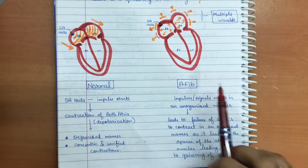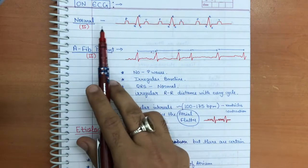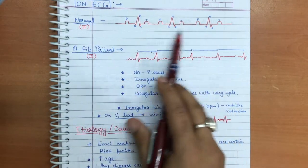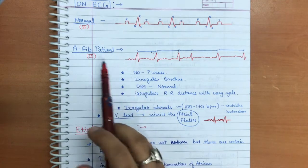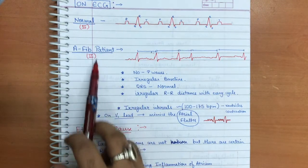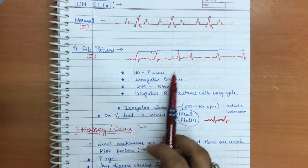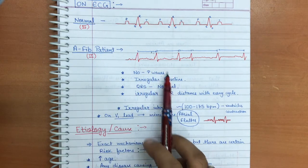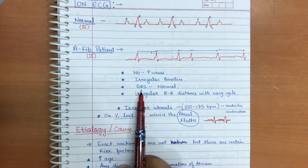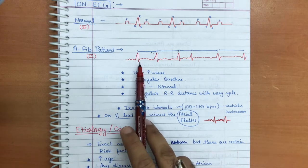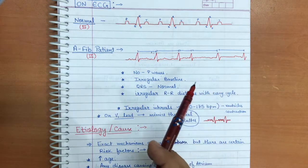Now we'll compare the ECG of a normal person with that of an atrial fibrillation patient. On lead II, a normal ECG shows a regular PQRST interval. In atrial fibrillation on the same lead, you can easily see that there are no P-waves, and the baseline is irregular due to multiple foci generating impulses. The QRS complex, however, remains normal.